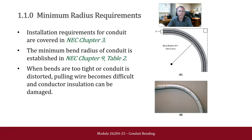The Minimum Radius Requirements. Installation requirements for conduit are covered in NEC Chapter 3. The minimum bend radius of conduit is established in NEC Chapter 9, Table 2. When bends are too tight or conduit is distorted, pulling wire becomes more difficult and conductor insulation can be damaged.